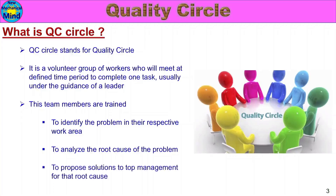To propose solutions to top management for that root cause — if you identify the root cause, you prevent or avoid it. How do you use top management to propose solutions and address the root cause? This is the Quality Circle brief explanation.